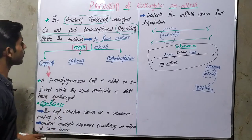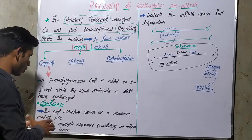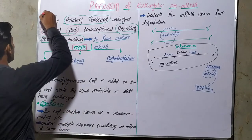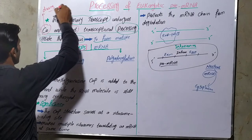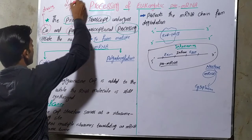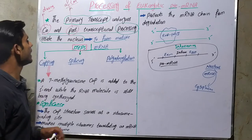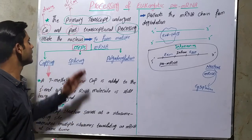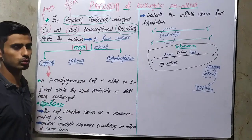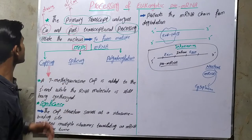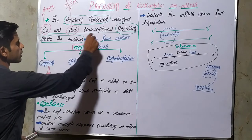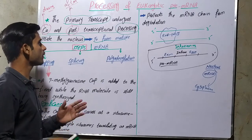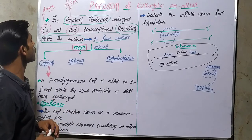There is an important concept about co- and post-transcriptional processing. 'Co' means during, and 'post' means after. If this processing happens during or along with eukaryotic transcription, then it is called co-transcriptional processing. If this processing happens after eukaryotic transcription has ended, then it is called post-transcriptional processing.